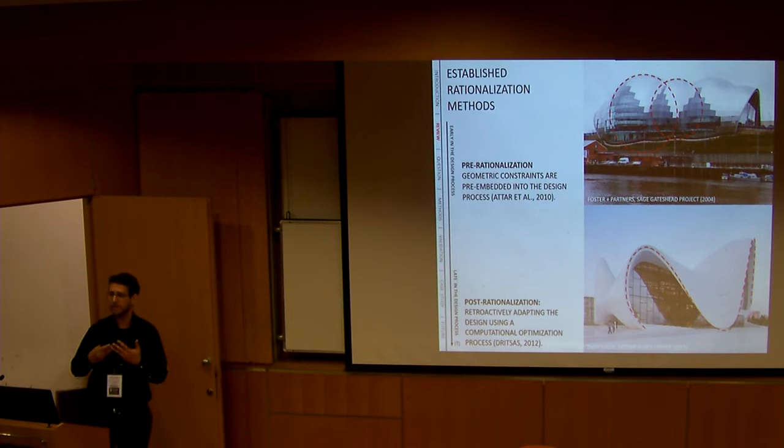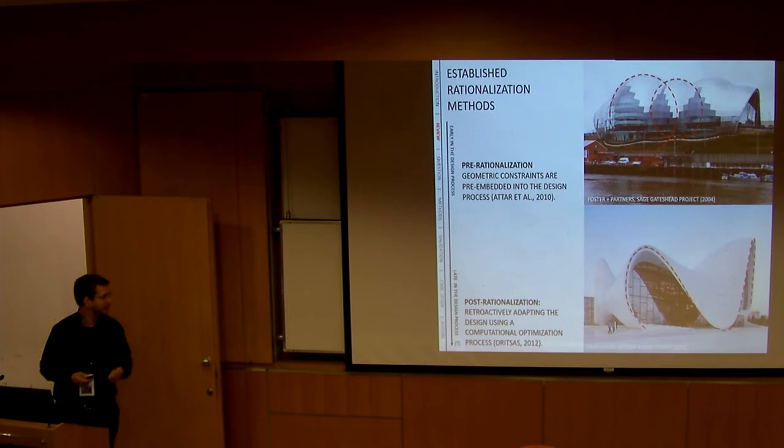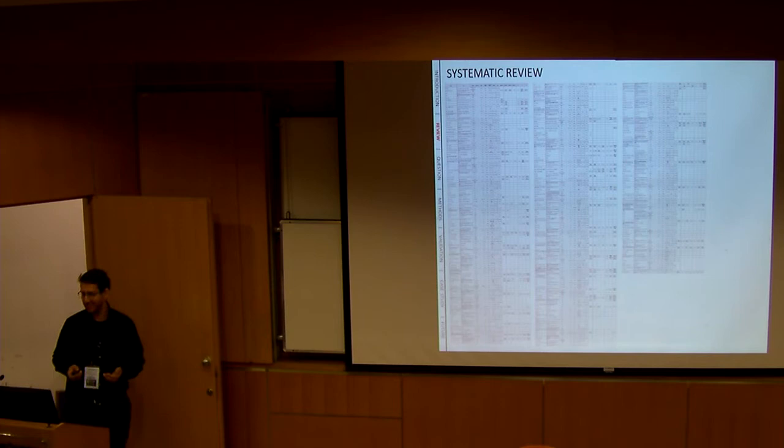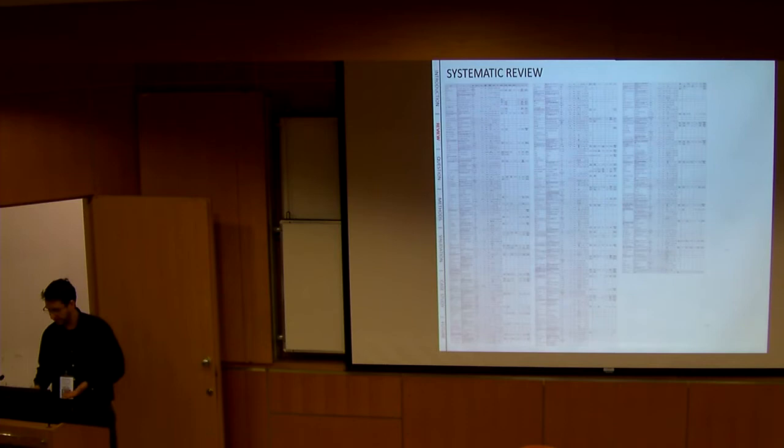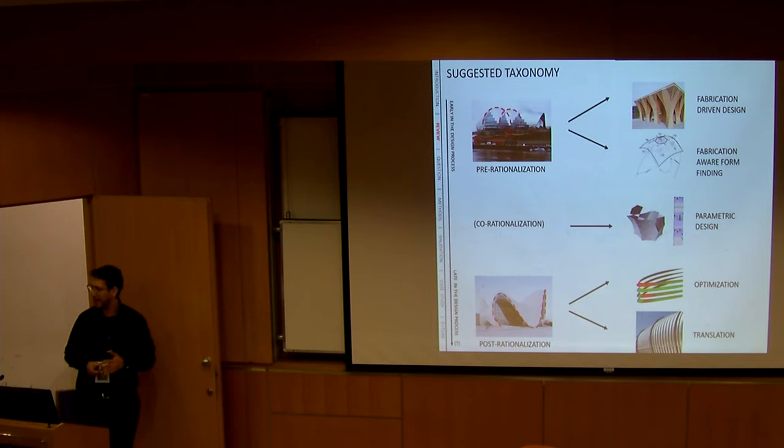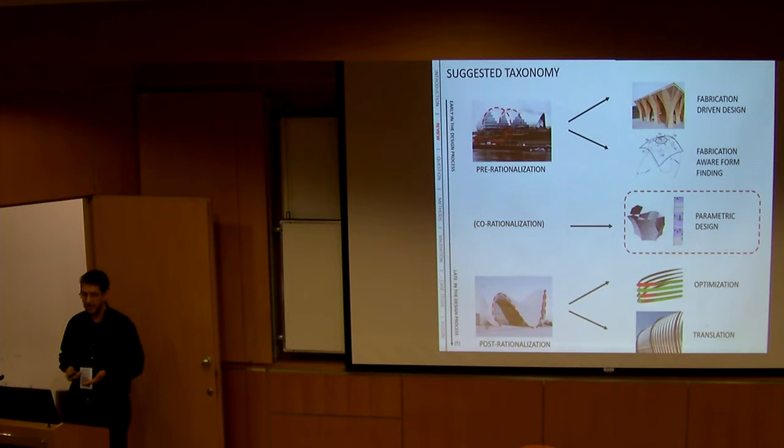We can take a free-form design and rationalize it into something that the constructor can build. This is usually a computational process involving a lot of algorithms, and I'm sure I will learn about it more after the lecture. But what I did before I started my PhD was I read a lot, and I tried to see how this process is actually performed in the practice today according to hundreds of papers that I read. And what I saw is that there are actually a bit more variations on that. I won't speak on all the taxonomy that I suggest in the paper that was just accepted to Automation in Construction. I will speak about parametric design.